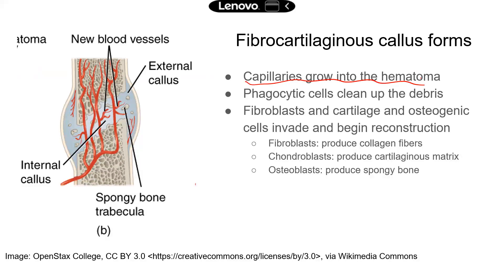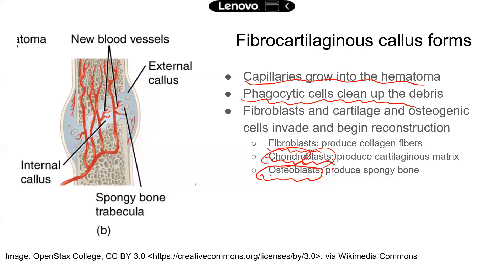Capillaries will grow into the hematoma, so new blood vessels will grow into the site of damage. There will be phagocytic cells that will clean the debris — they will engulf broken tissues and break them down. Fibroblasts will produce collagen fibers, the same type of cells in the skin that make collagen. These collagen fibers will connect the broken ends of the bone. There will also be chondroblasts, which — based on the name — produce cartilaginous matrix. And lastly, osteoblasts, which are bone-forming cells, will make spongy bone.